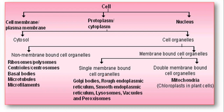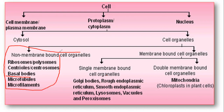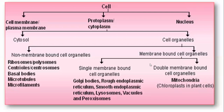Now you also need to know about membrane-bounded and non-membrane-bounded structures. Non-membrane-bounded organelles include centrioles, ribosomes, basal bodies, microtubules, and microfilaments. Single membrane-bounded structures include Golgi bodies, RER, SER, lysosomes, peroxisomes, glyoxysomes, and vacuoles. Double membrane-bounded structures include mitochondria, chloroplasts, all other plastids, the nucleus, and autophagosomes. That was all about your first lecture. I hope this lecture will be beneficial for you. Please comment. Thank you so much.